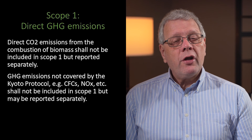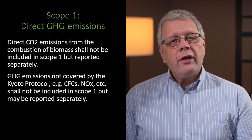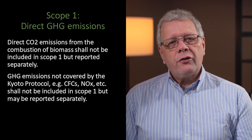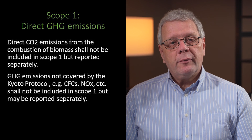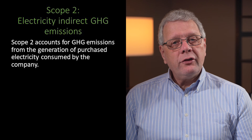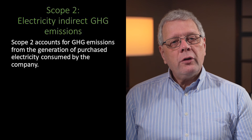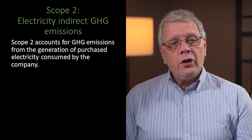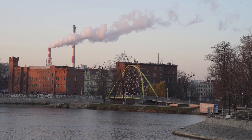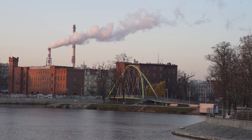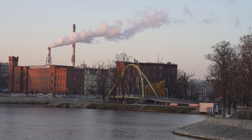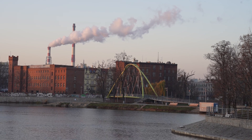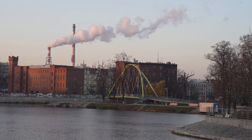GHG emissions not covered by the Kyoto Protocol, such as CFCs and nitrous oxides, shall not be included in scope 1, but may also be reported separately. Scope 2 covers electricity indirect GHG emissions. Scope 2 accounts for the GHG emissions from the generation of purchased electricity consumed by the company. Purchased electricity is defined as electricity that is purchased or otherwise brought into the organisational boundary of the company. The scope 2 emissions physically occur at the facility where the electricity is generated.